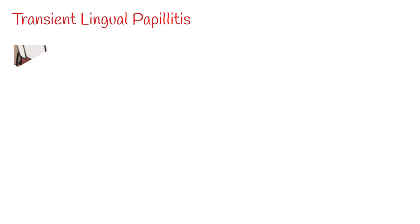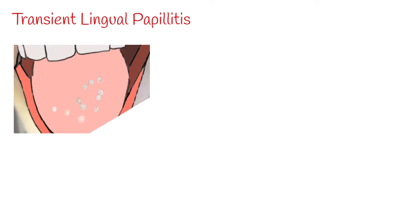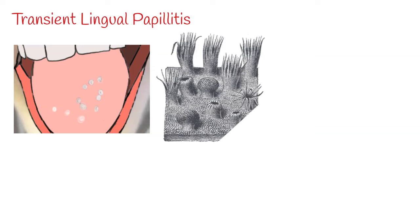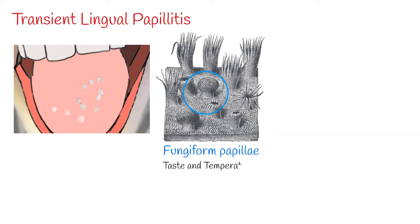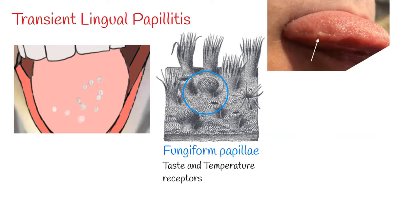Transient lingual papillitis is a common painful inflammation of the tongue. More specifically, it is inflammation of fungiform papillae — mushroom-shaped structures located on the dorsum of the anterior two-thirds of the tongue. Fungiform papillae contain taste buds, especially for bitter taste, temperature receptors, and have a good blood supply.